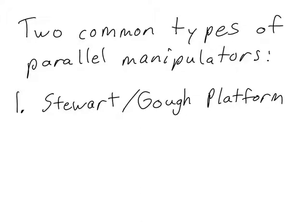The first common type is called the Stewart or Goff platform. This type of manipulator is named after its inventors. Goff invented this type of manipulator in 1947. Later on, in 1965, Stewart suggested that this sort of manipulator would be a good type to use for flight simulators. Still today, the Stewart or Goff platform is the type of manipulator used for flight simulators as well as other kinds of simulators.